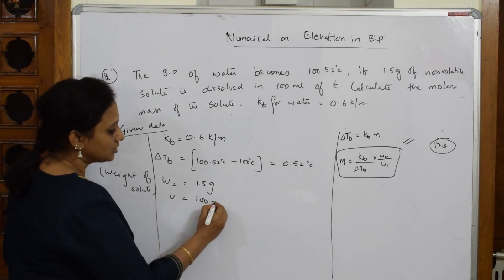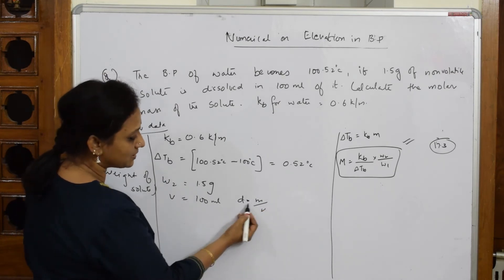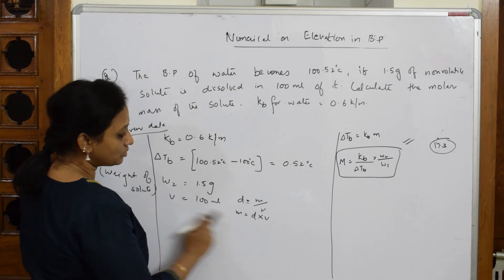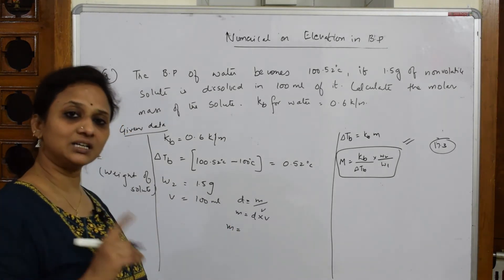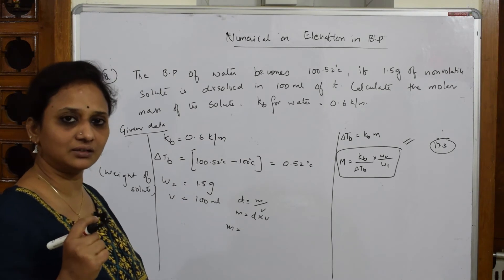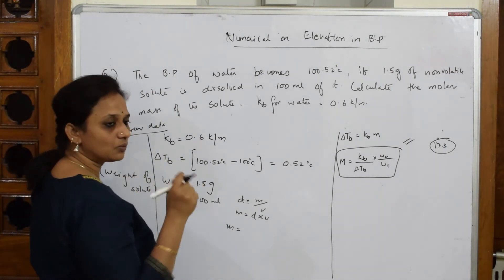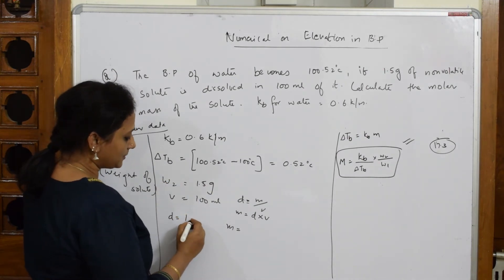Let us write first 100 ml. Density is equal to mass by volume. I want this mass isn't it? Mass is equal to density into volume. Volume is already there. Mass is equal to density of water is what? One isn't it? 1 gram per centimeter cube. Density, careful: 1 gram per centimeter cube. Let us consider density of water as 1 gram per centimeter cube. This is your standard value for water.